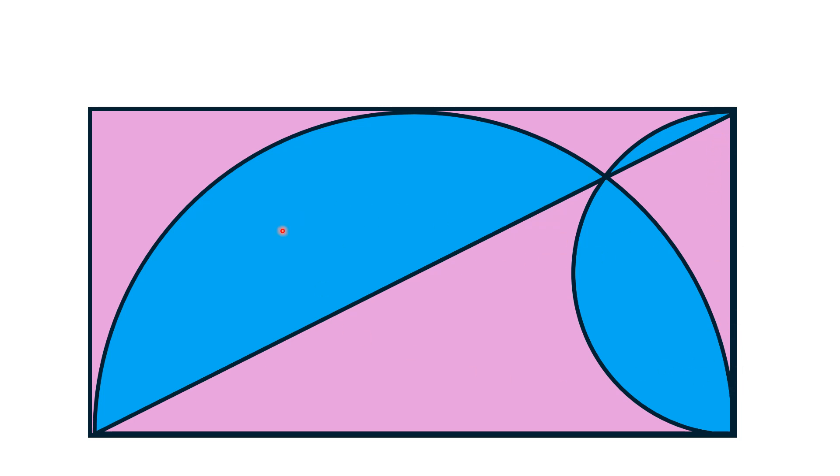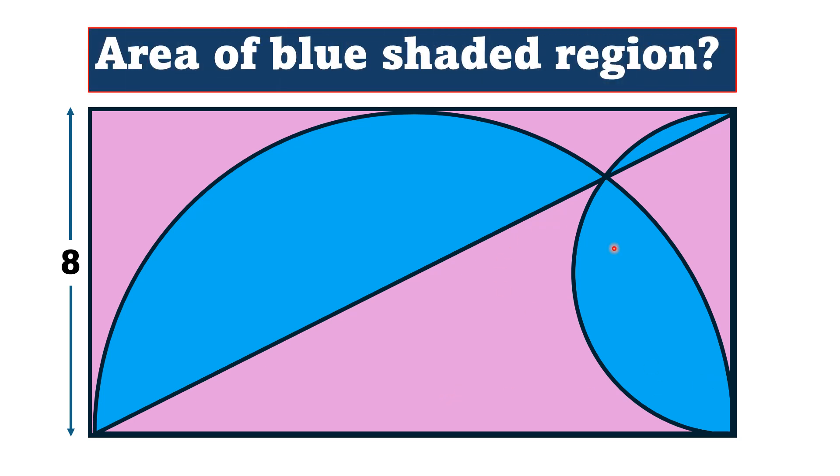And there are some patches shaded blue. If the breadth of this rectangle is equal to 8 units, then by this limited data, we have to find the area of this blue shaded region.